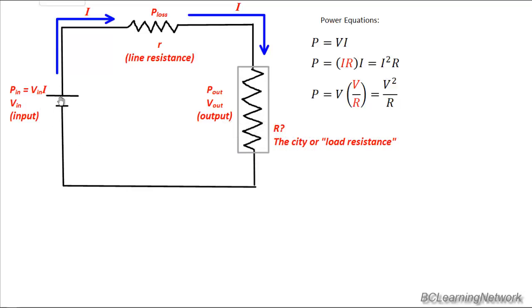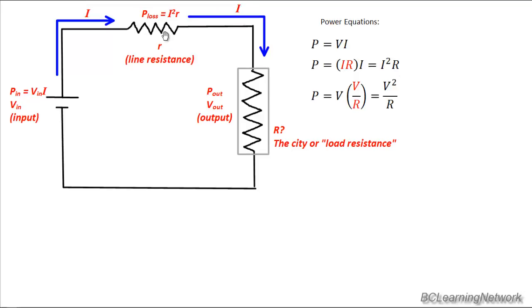So the only one left is this I squared R. Now, we know the current. We can figure out the current using our input data. The line resistance is given. It'll be little r. So this is a great formula to use for power loss. And this is probably the only one you'll ever use to find the power lost in a line. So let's write that now on our diagram.